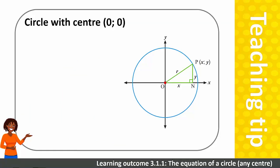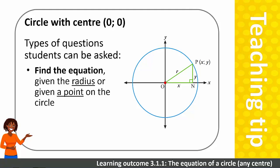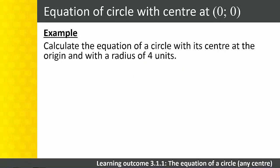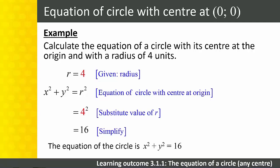Teaching Tip: It's important that you expose your students to all the possible different types of questions that can be asked on Cartesian geometry in Level 4, and get them to practise them. Let's look at the kinds of questions that can be asked with a circle with its centre at the origin. Students could be asked to find the equation given the radius or given a point on the circle, or to calculate the radius given any point on the circle. Example: Calculate the equation of a circle with its centre at the origin and a radius of 4 units. We know r = 4, and the equation is x² + y² = r². Substituting, we get x² + y² = 4² = 16.